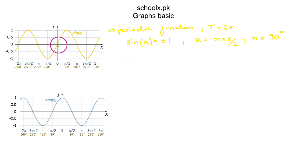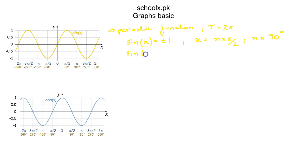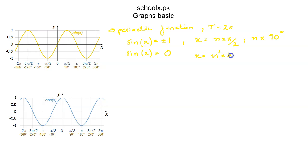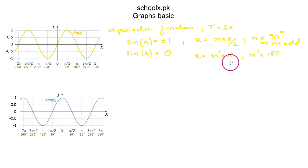The points at which the graph of sine of x crosses the x-axis are at whole number multiples of 180 degrees or π. So sine of x is 0 when x equals n·π or n·180 degrees, where n is an integer. And sine x equals positive or negative 1 when n is an odd integer.